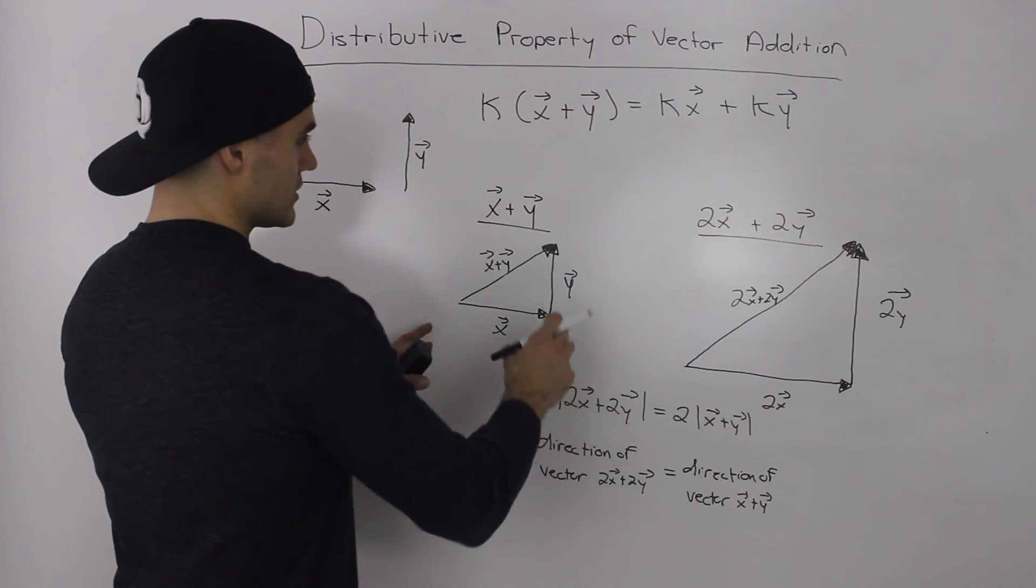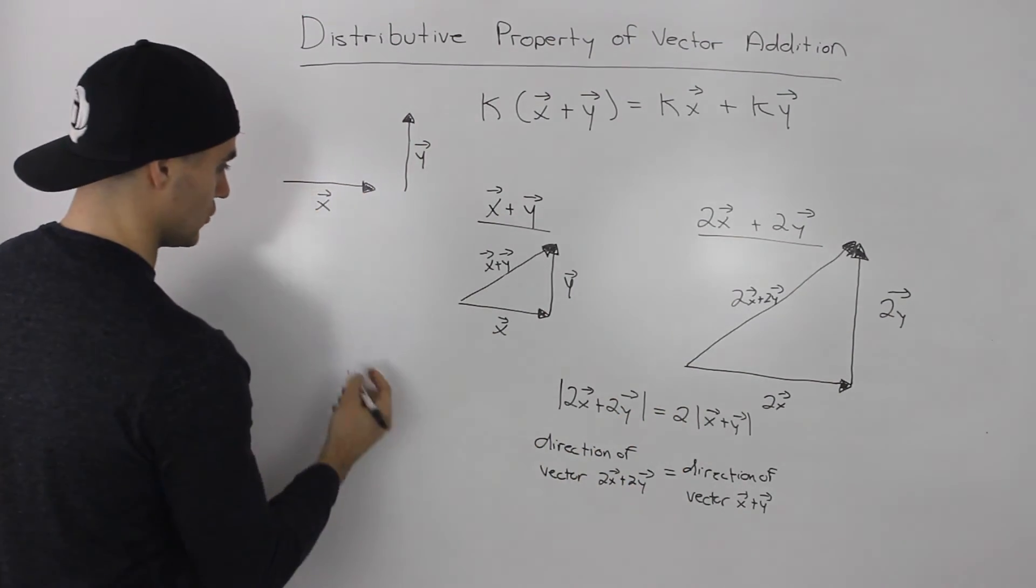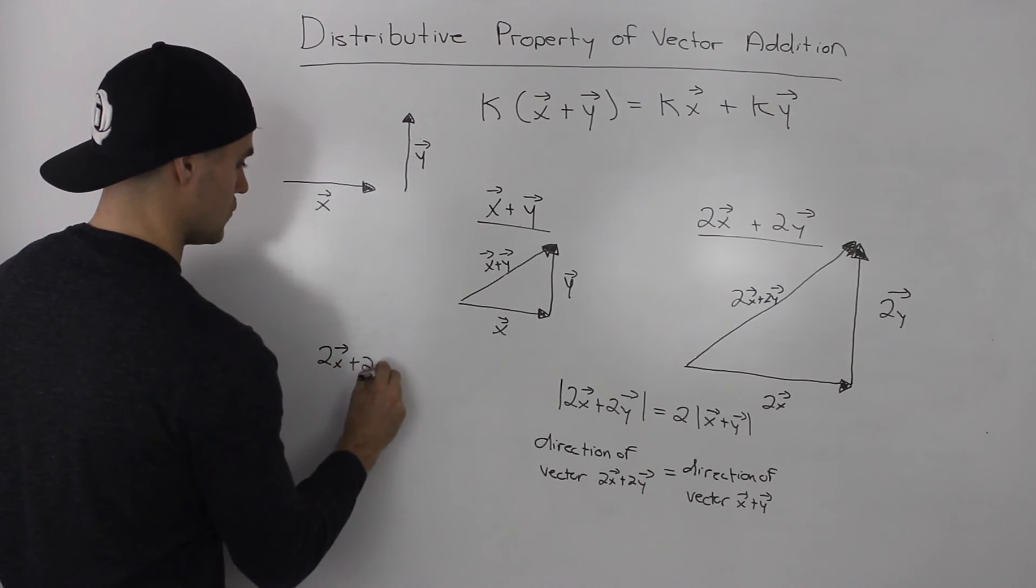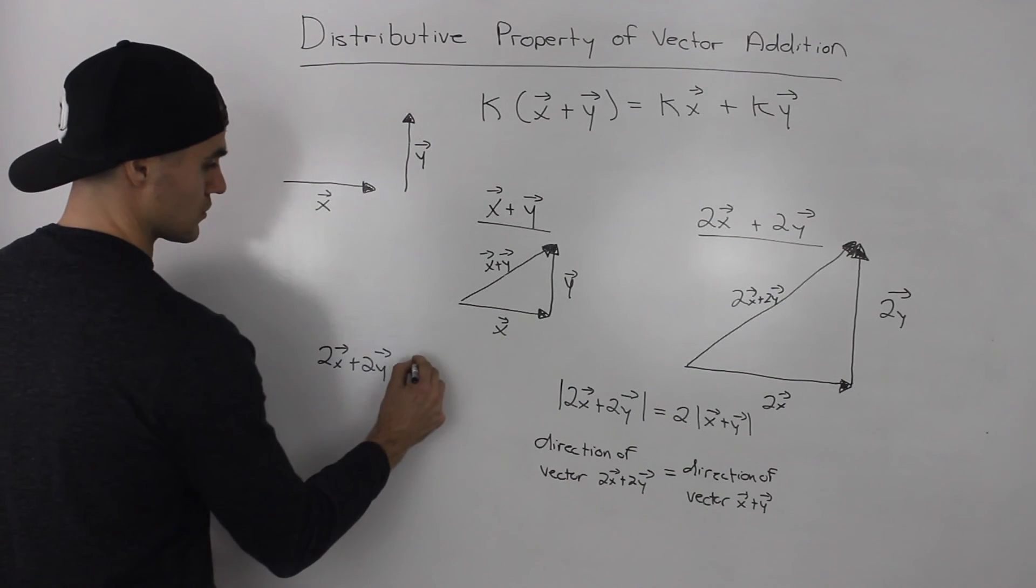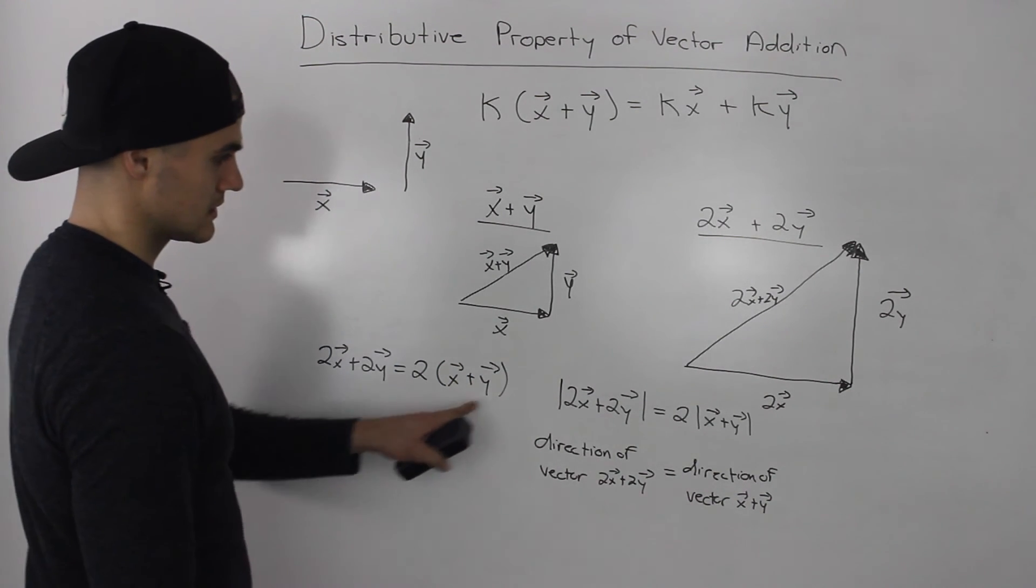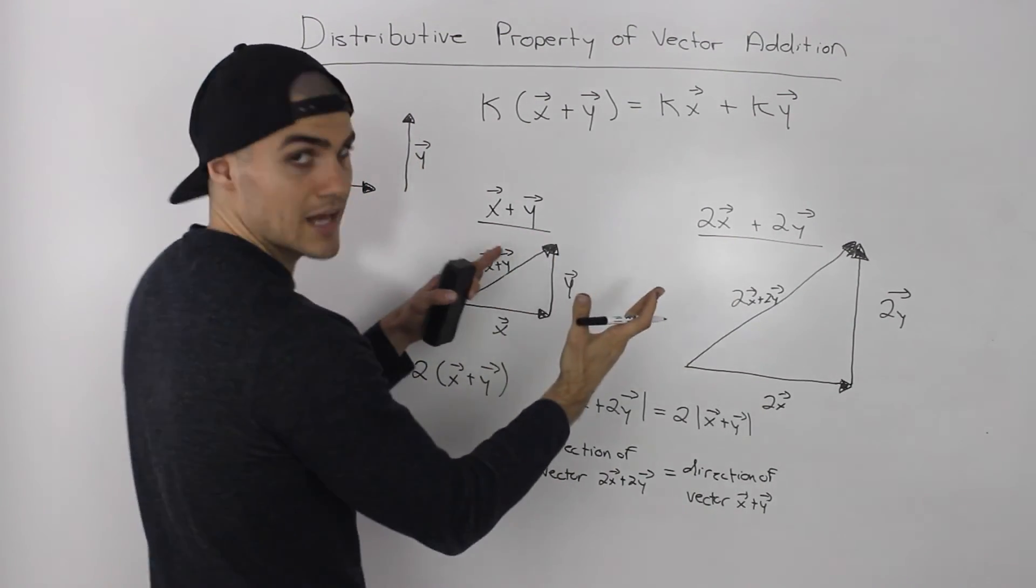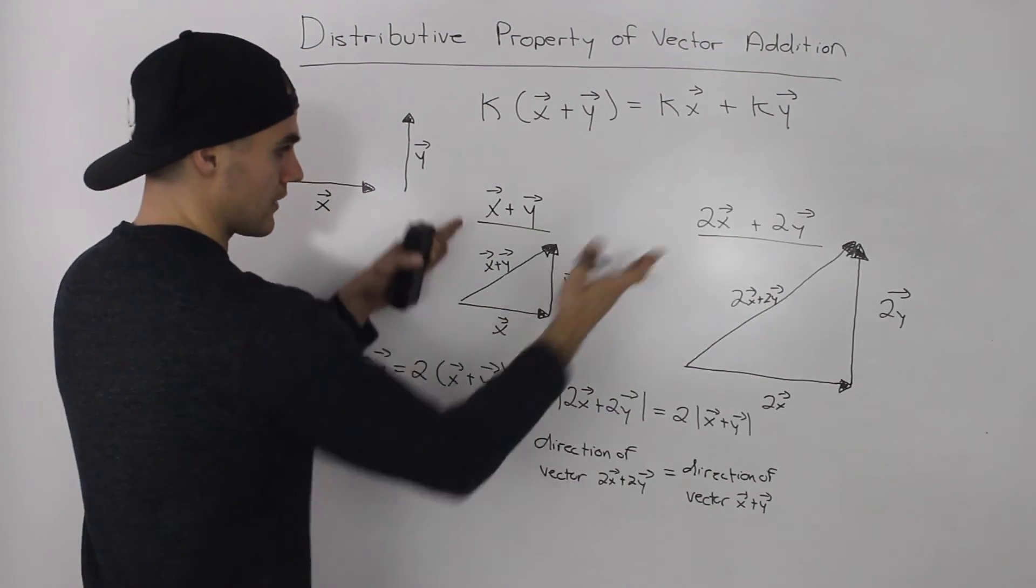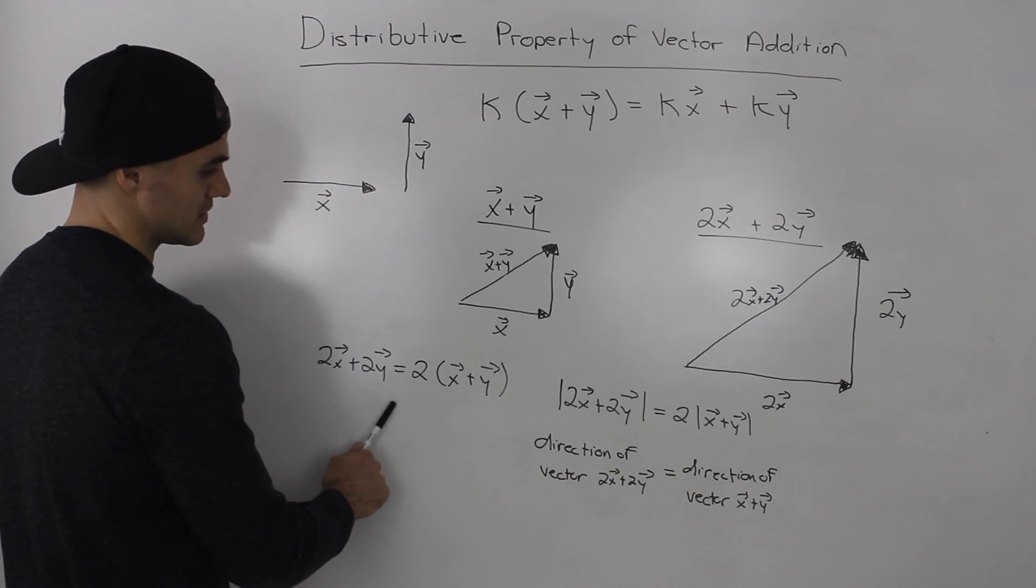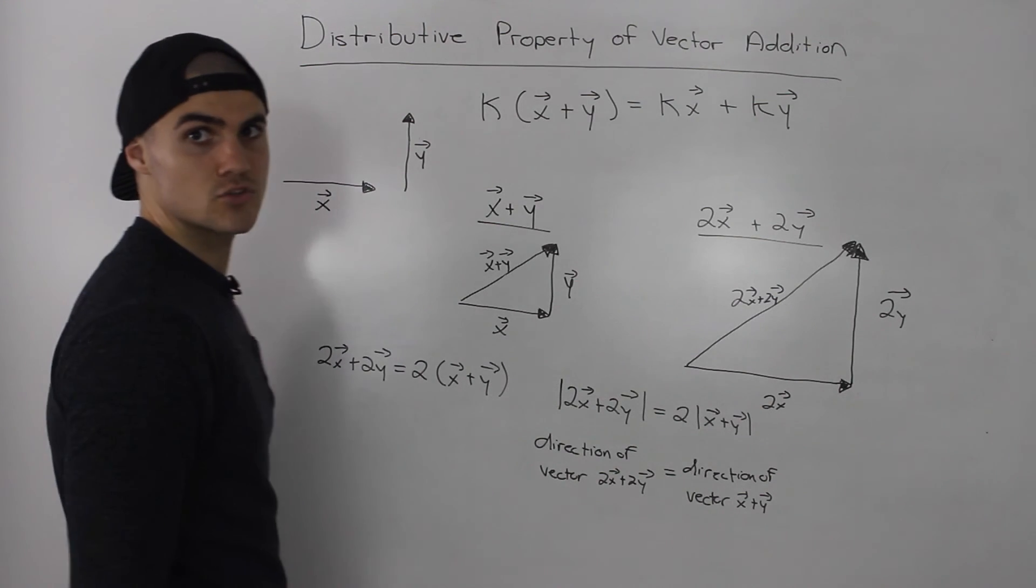So the magnitude of vector 2x plus 2y is equal to 2 times the vector x plus y. Again, the magnitude of 2x plus 2y is double that of x plus y if you put them side by side, assuming that you draw everything to scale, and their directions are the same. So the vectors 2x plus 2y added together is equal to the vector x plus y added together multiplied by 2, and that proves our distributive property of vector addition.